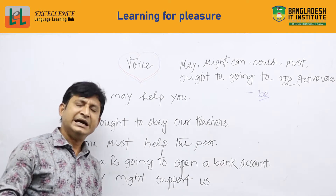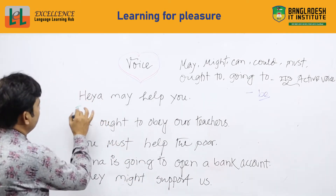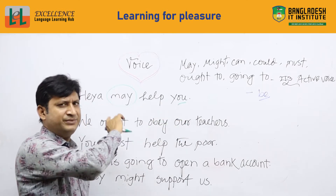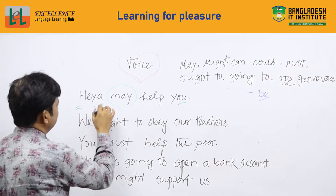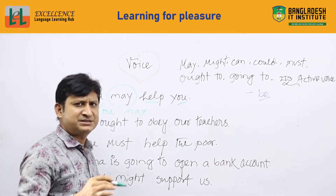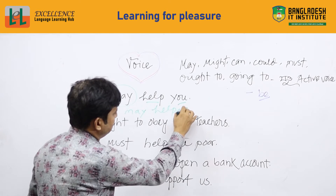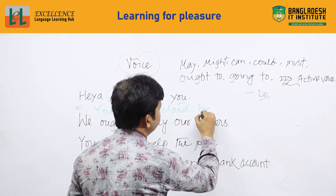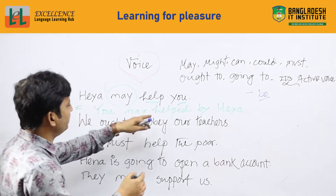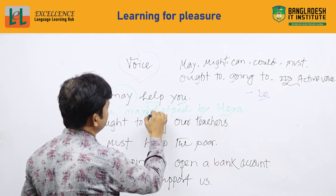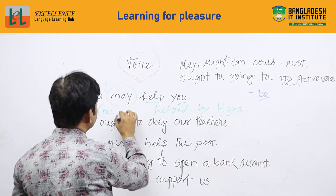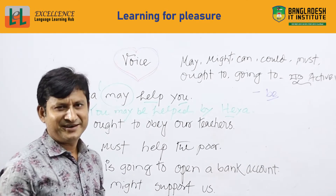Here may help you. So we have 'may' — this is a modal verb. As we learned before, the object of the active voice will become the subject. So 'you' comes first, then 'may', and we make the verb in passive past participle form. Generally, we use the preposition 'by'. So the result is: 'You may be helped by here.' We use 'be' just after 'may'.